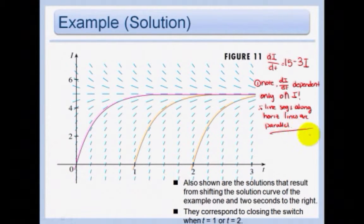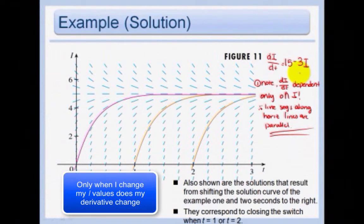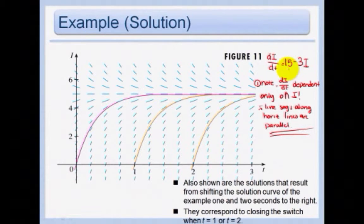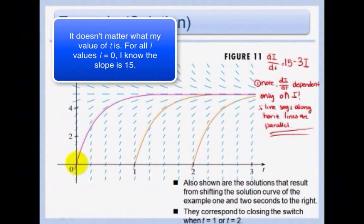Now look at what I wrote here. DI DT is dependent only on I. Therefore the line segments along horizontal lines are parallel. This is key. What do I mean by that? I mean that since it only depends on I and I is on my y axis because I had TI. Because the derivative only depends on I, only when I change my I value does my derivative change. It is not dependent on X. So for example if I let I be 0 I know my derivative is 15 minus 0 or 15, a very very steep line. It doesn't matter what my T is. My slope is 15 along this whole horizontal row.